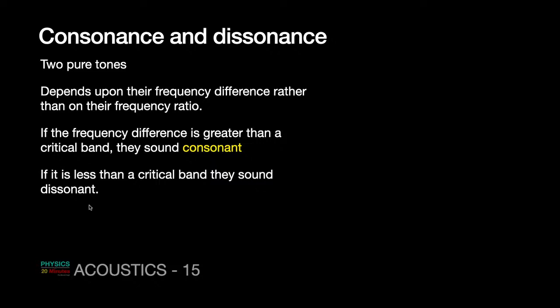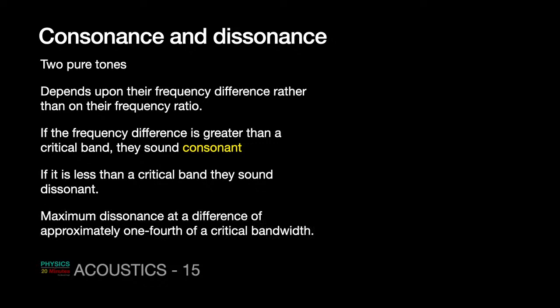We already discussed this in the context of beats in Chapter 8. When two frequencies are very close, you get a fused frequency. When two frequencies are separated by some distance on the frequency scale, you get a rough tone. When they are much separated, they are heard independently and clearly. So similarly, if two pure tones fall on one single critical band they sound consonant, and if they fall on two different critical bands they sound dissonant.